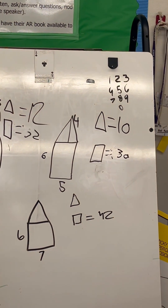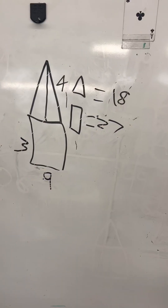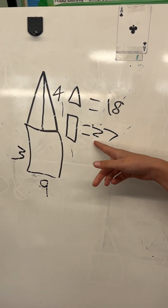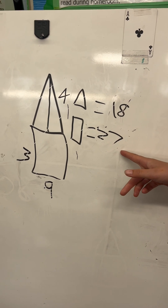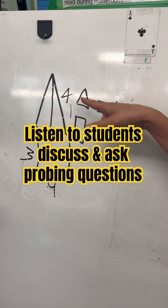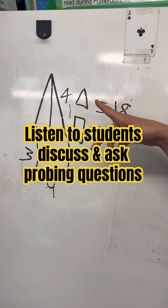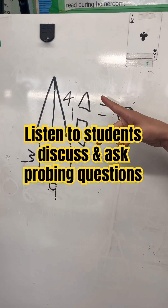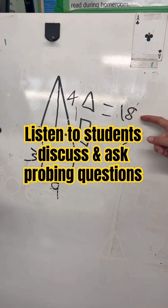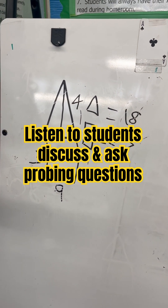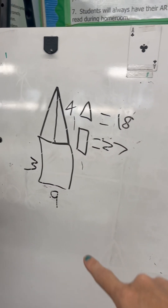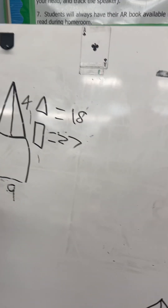Okay, so keep working. 9 times 3 is 27, and then 9 times 4 is 36. It's 36 divided by 2 is 15. Great, so I see that you did not use the same digit more than once.